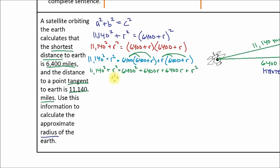This works out kind of nice. Take a look at this. We have an R squared on both sides. We can actually subtract that from both sides, and that's going to get rid of that. So now you can see that we do a little simplifying here. And now we end up with just 11,140 squared is equal to, let's add these two together. Oh sorry, this is 6,400 squared, and these two terms are like terms, 6,400 plus 6,400 is 12,800R. This R squared minus R squared, that got rid of the R squared. It's getting a little bit simpler.